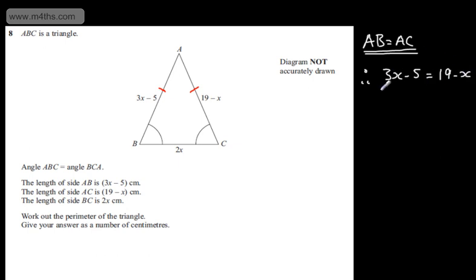To do that, I'm going to add x to both sides, so 4x minus 5 will be equal to 19. I'm now going to add 5 to both sides of the equation, so 4x will be equal to 24. I'm now going to divide both sides of the equation by 4. We will have 24 over 4, and that gives me x is equal to 6.